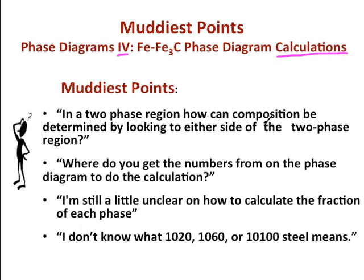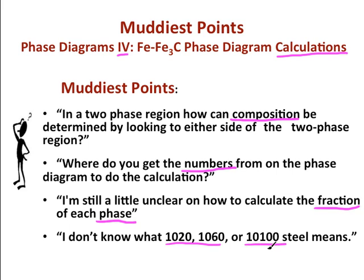In a two-phase region, how can composition be determined by looking to either side of the two-phase region? Where do you get the numbers from on the phase diagram to do the calculation? I'm still a little unclear on how to calculate the fraction of each phase, and I don't know what 1020, 1060, or 10100 steel means.